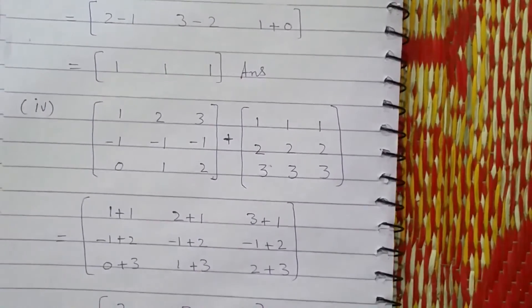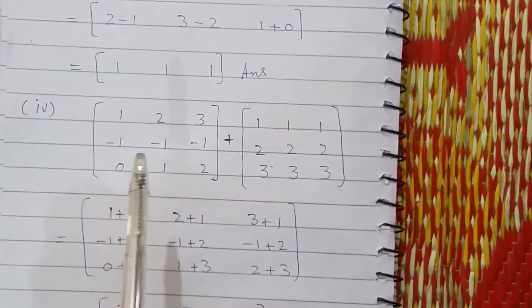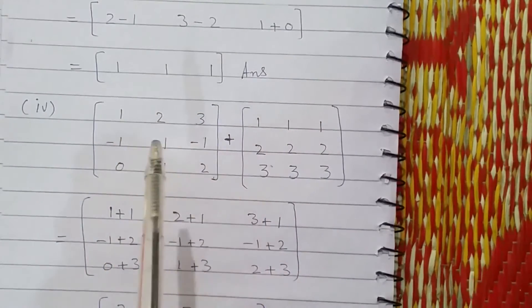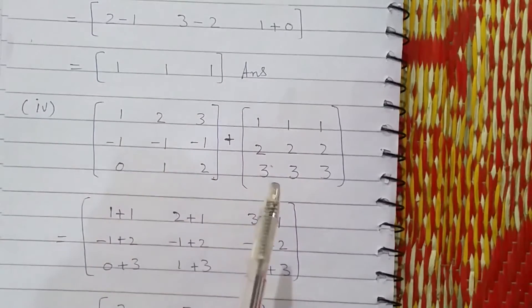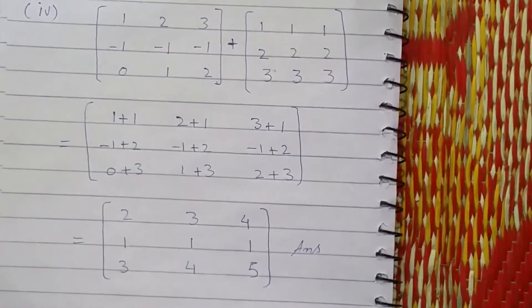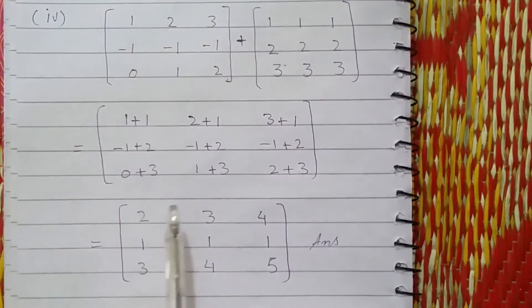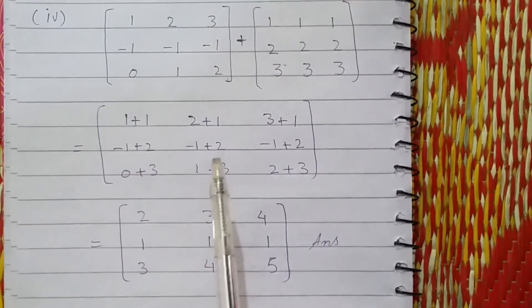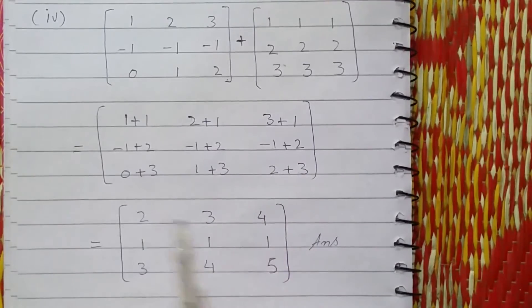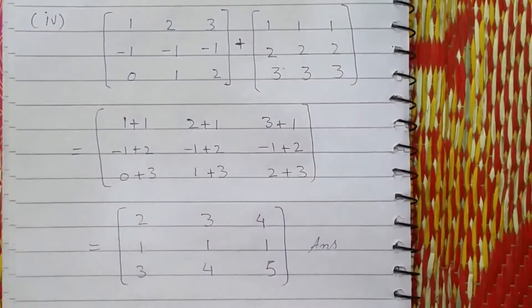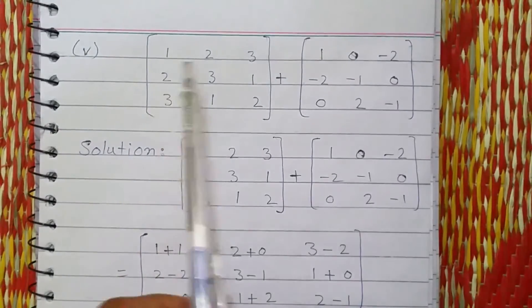Here again the corresponding elements have been added: 1 plus 1; 2 plus 1; 3 plus 1; minus 1 plus 2; minus 1 plus 2; 0 plus 3; 1 plus 3; 2 plus 3. So: 1 plus 1 yields 2; 2 plus 1 is 3; 3 plus 1 is 4; minus 1 plus 2 is 1; 0 plus 3 is 3; 1 plus 3 is 4; 2 plus 3 is 5.